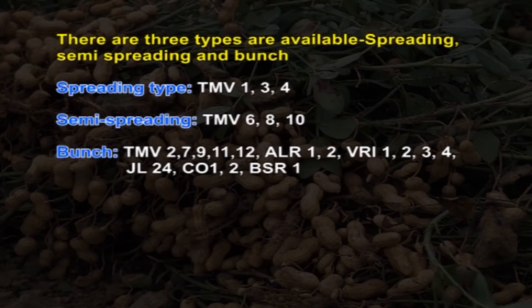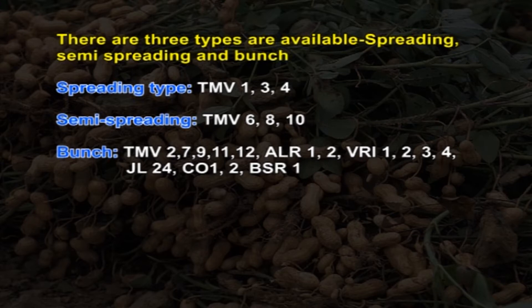From breeder seed we produce foundation stage 1, then foundation stage 2, then certified stage 1 and certified stage 2. There are 3 variety types available: spreading variety, semi-spreading variety and bunchy type. For the spreading type, examples are TMV 1, 3, 4. For semi-spreading variety, examples are TMV 6, 8, 10. For bunchy type, examples are TMV 2, 7, 9, 11, 12, ALR 1 and 2, VRI 1, 2, 3, 4, JL 24, Co 1, Co 2 and BSR 1.